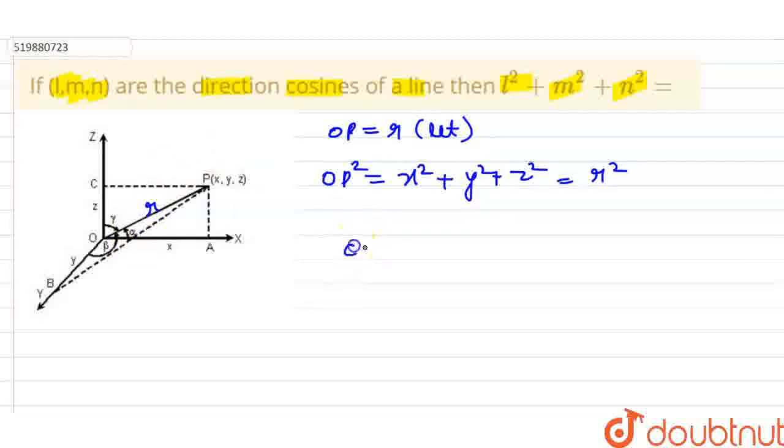This is the angle alpha. What will it be? This is x upon r. This is the base x and this is r. And this equals l, because the direction cosine is l. So cos α equals x/r equals l.